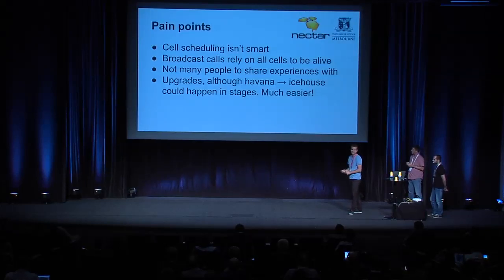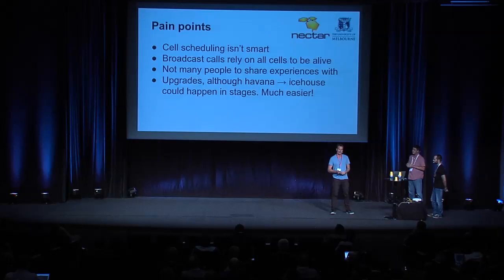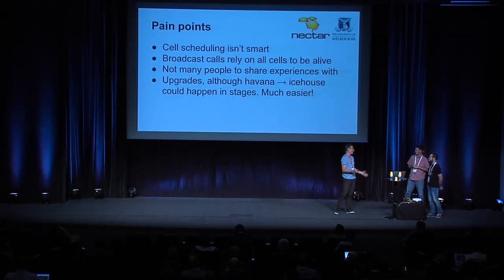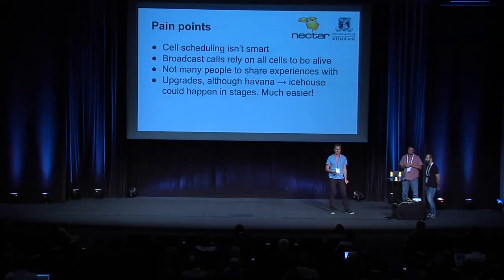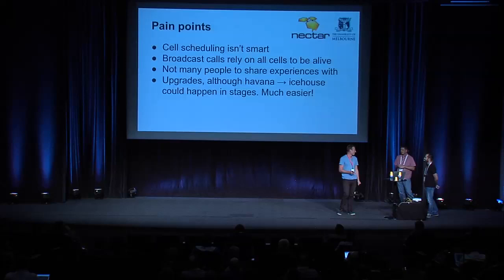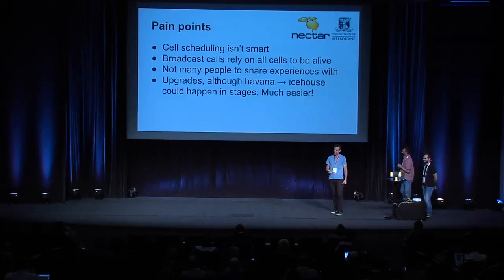One of the other things is we don't have many people using cells, which can be tricky when you're trying to get help from the community. In saying that, we have a pretty good relationship with Rackspace and CERN, so we kind of compare notes — about 17 times in the last two days. We're all doing the same thing.